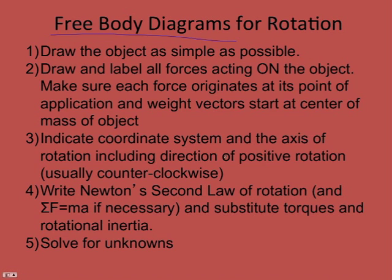Weight vectors start at the center of mass of the object, or the geometric center for our purposes. Then we indicate a coordinate system — for rotation it's a little twisty arrow, depending on whether you want clockwise or counterclockwise. Counterclockwise is usually positive. Then we write Newton's second law for rotation. Sometimes we also have an object in linear acceleration, so we have to look at that as well, and then solve for the unknown.